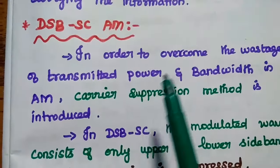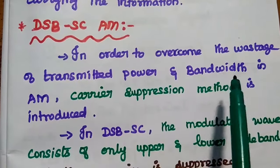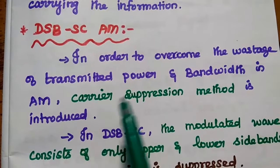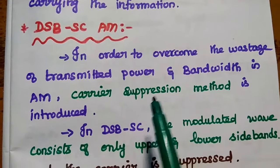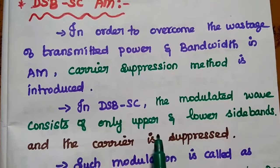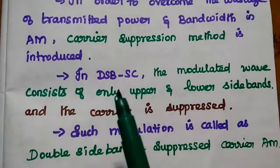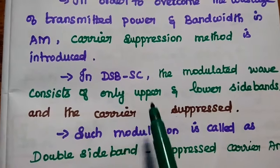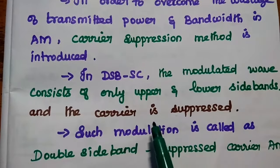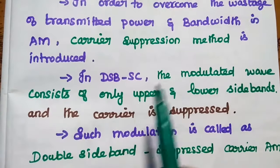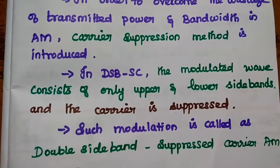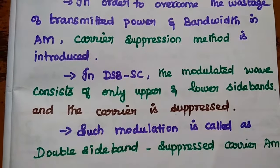In order to overcome the wastage of transmitted power and bandwidth in full carrier amplitude modulation, we are going to use the carrier suppression method. Carrier suppression method means the modulated wave consists of only upper and lower sidebands, and the carrier signal is suppressed. It is amplitude modulation, so the amplitude of the carrier is varied in accordance with the modulating signal. In this suppressed carrier method, we are going to suppress the carrier signal. Such modulation is called double sideband suppressed carrier amplitude modulation.